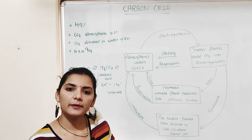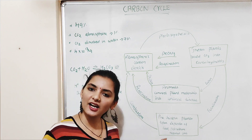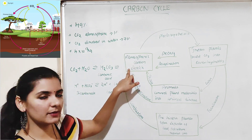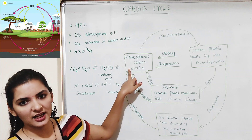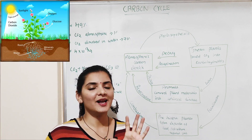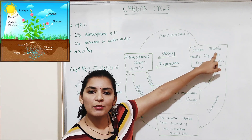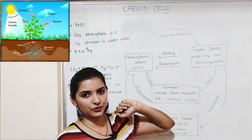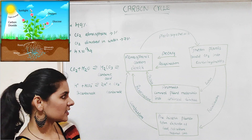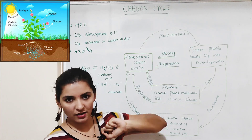Now we'll study how carbon is cycled on the earth. Since the carbon cycle has no fixed start or end point, for convenience I'll begin at atmospheric carbon dioxide. This atmospheric carbon dioxide is used by producers — mainly plants and algae — to produce carbohydrates by the process called photosynthesis.